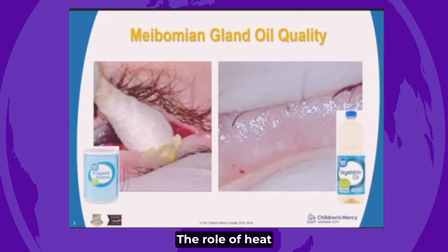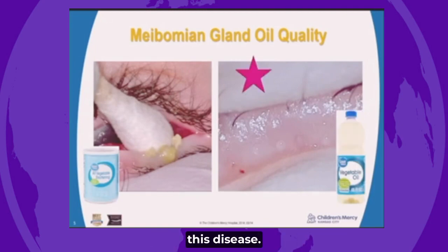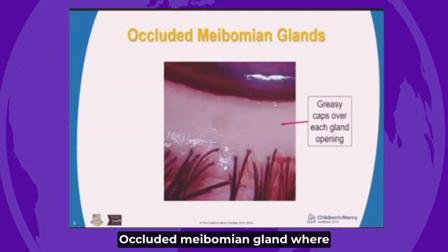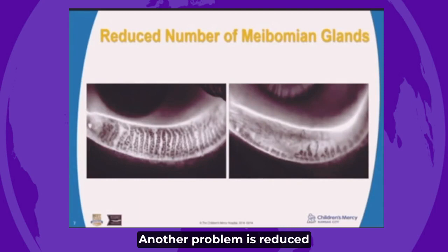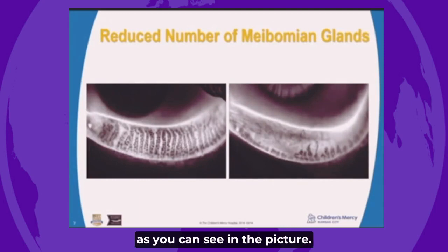The role of heat is important in treating this disease. Occluded Meibomian Glands, where you can see a greasy cap over each gland opening, are another problem. Reduced number of Meibomian Glands can also occur, as you can see in the picture.